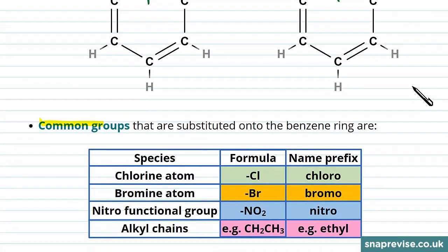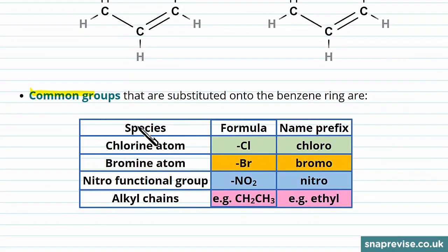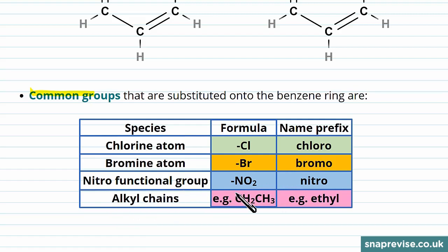Some common groups that we can substitute onto a benzene ring are given in this table. We can have chlorine atoms with the prefix chloro. We'll look more at these prefixes and how the naming of aromatic compounds works in a minute. We then have bromine atoms with the prefix bromo, nitro functional groups which are given by NO2 — these give a prefix of nitro — and alkyl chains. So for example, we could have CH2CH3, which would have a prefix of ethyl. The rest of these alkyl chains you should have come across before: methyl, ethyl, propyl, and so on.